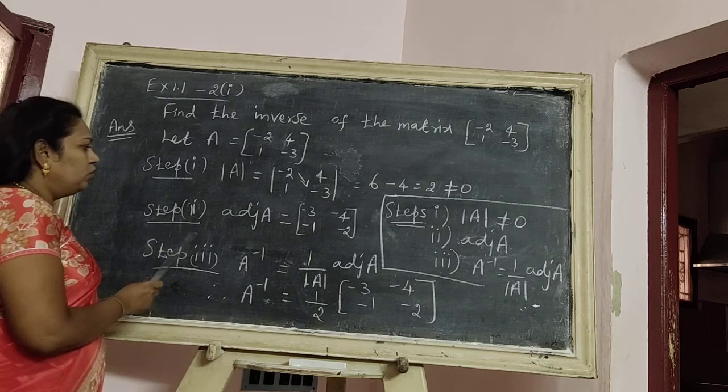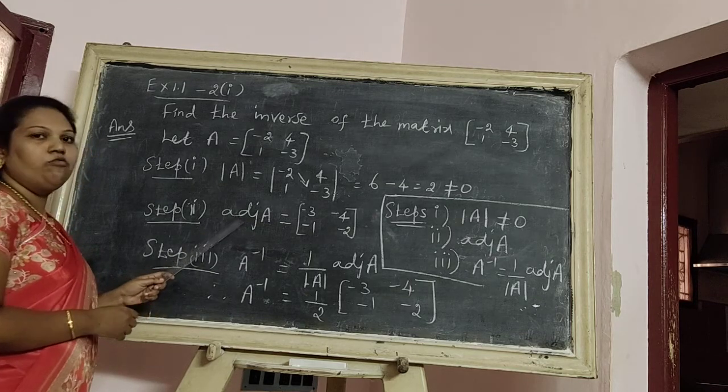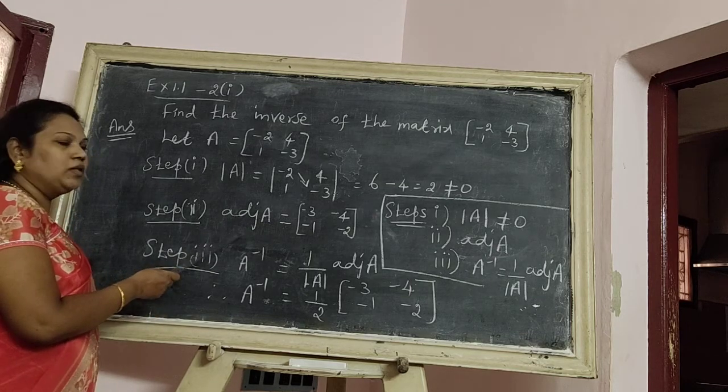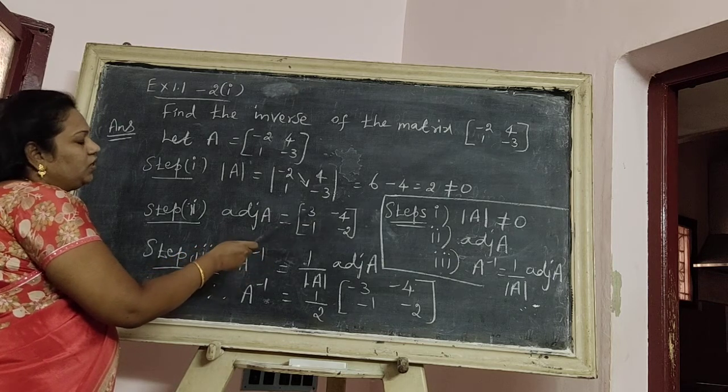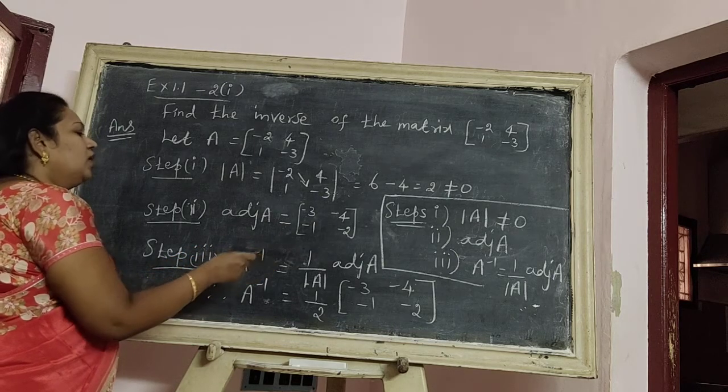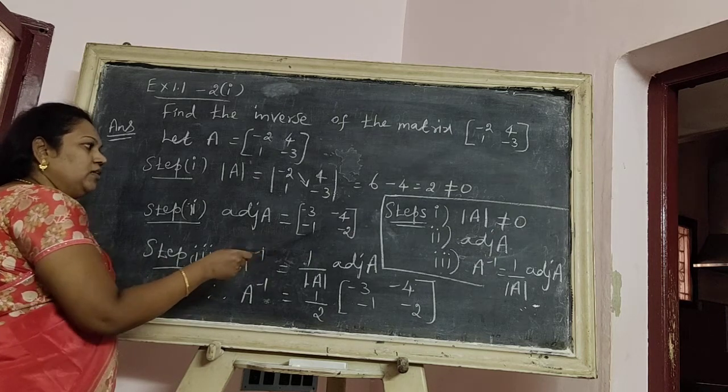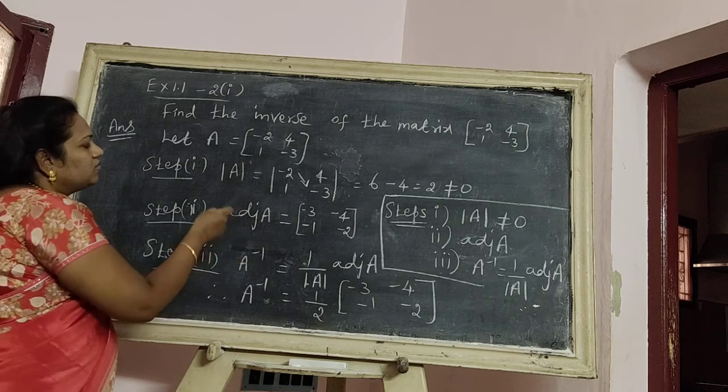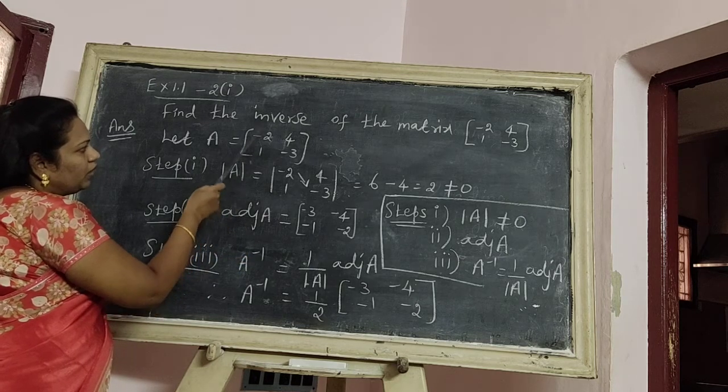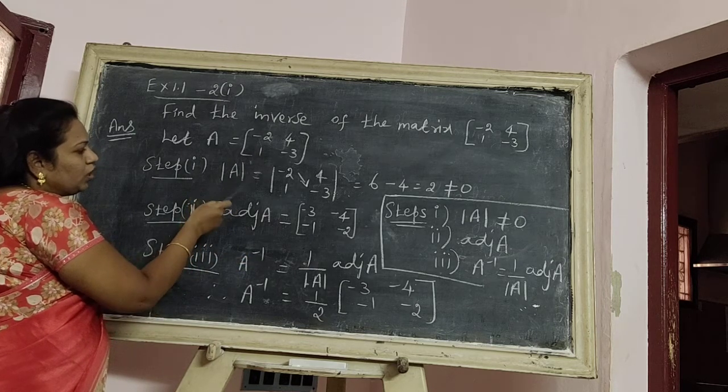Next, step two: find the value of adjoint A. As in the previous problem, interchange the elements in the leading diagonal. Next, change the sign in the secondary diagonal. Therefore, we get the answer.